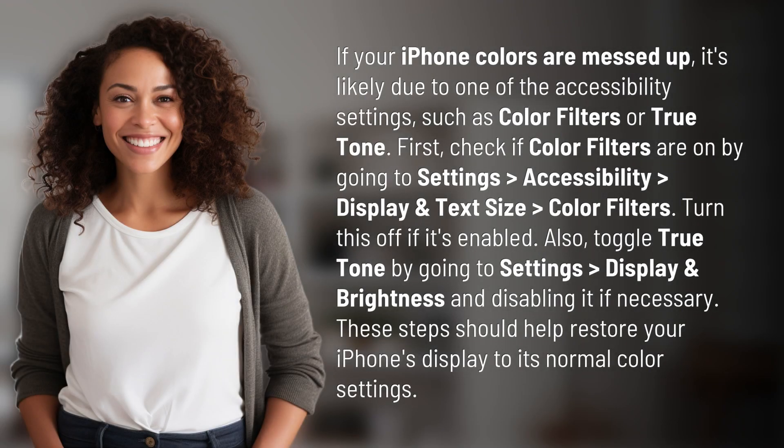If your iPhone colors are messed up, it's likely due to one of the accessibility settings, such as color filters or true tone. First, check if color filters are on by going to Settings > Accessibility > Display and Text Size > Color Filters. Turn this off if it's enabled.